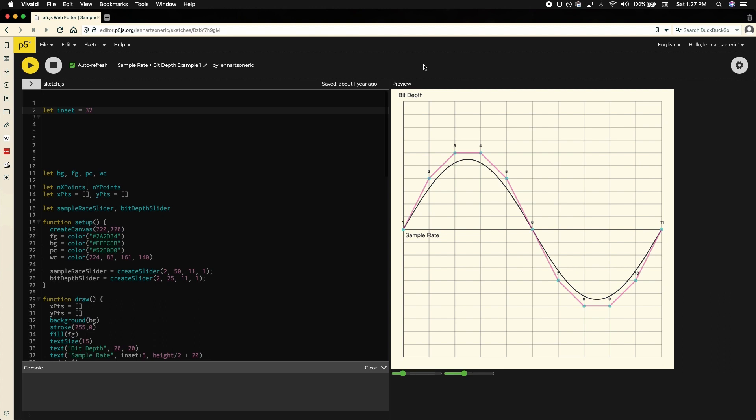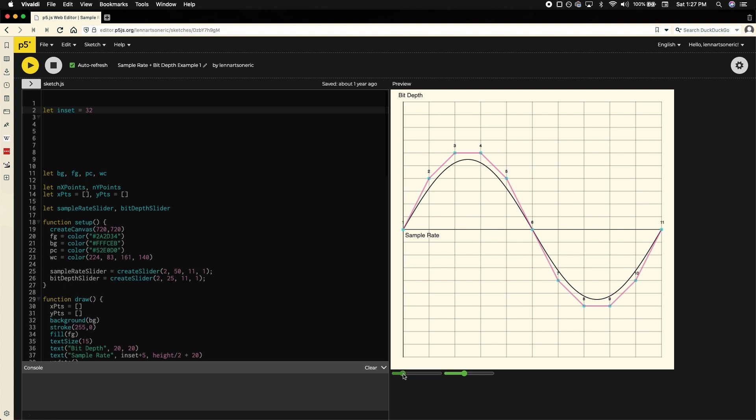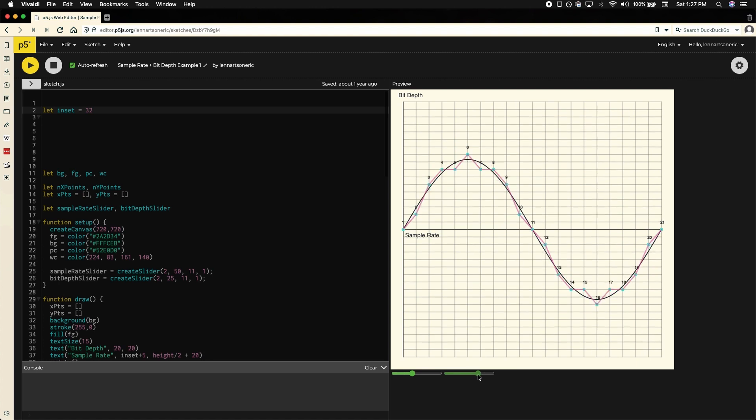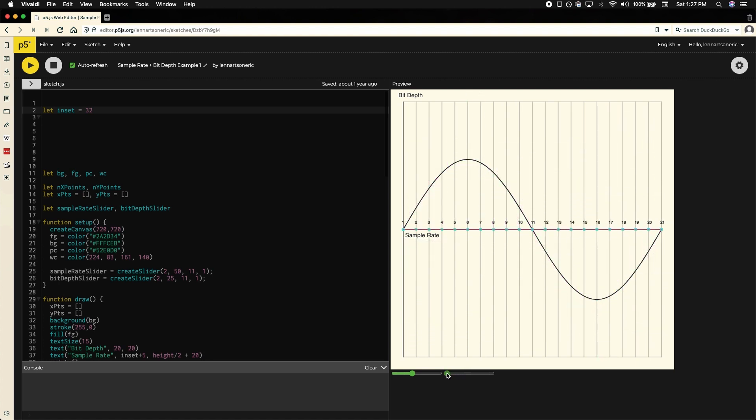Take a look at this example I made using p5.js to demonstrate. On the x-axis we have sample rate, and on the y-axis we have bit depth. Using these two sliders on the bottom here, I can change the sample rate or bit depth and see how closely it matches the sine wave on the screen. The higher each of these gets, the more accurate our sampled waveform becomes.